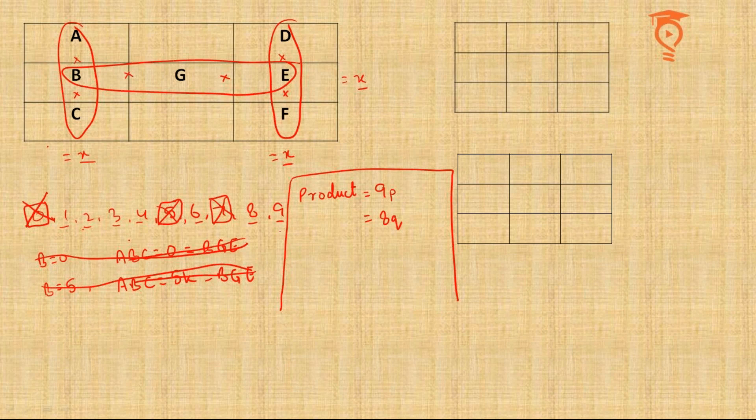Wherever 8 will be there, it will also make the product to be a multiple of 8. So our product, which we are taking as X, is going to be a multiple of 9 as well as 8. It is going to be a multiple of 72.